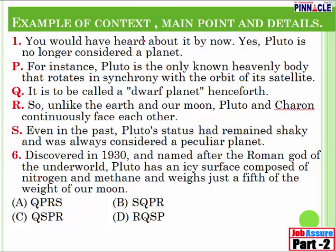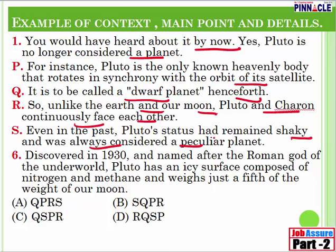Here is an example of context, main point, and details. Let me read it first. 'You would have heard about it by now. Pluto is no longer considered a planet. For instance, Pluto is the only known heavenly body that rotates in synchrony with the orbit of its satellite. It is to be called a devolved planet henceforth. So unlike the Earth and our moon, Pluto and Charon continuously face each other. Even in the past, Pluto's status had remained shaky and was always considered a peculiar planet. Discovered in 1930 and named after the Roman god of the underworld, Pluto has an icy surface composed of nitrogen and methane and weighs just a fifth of the weight of our moon.'